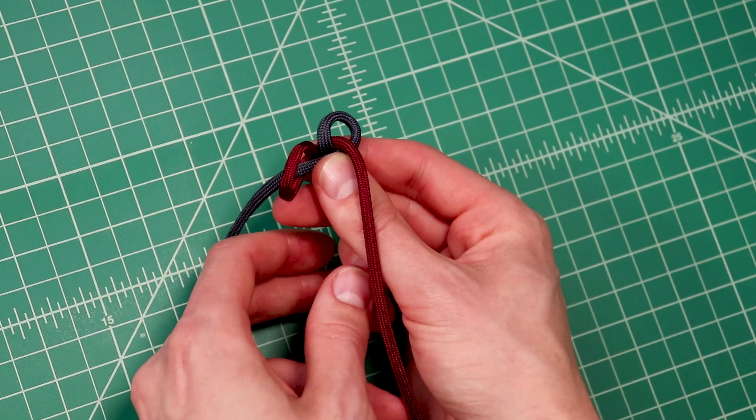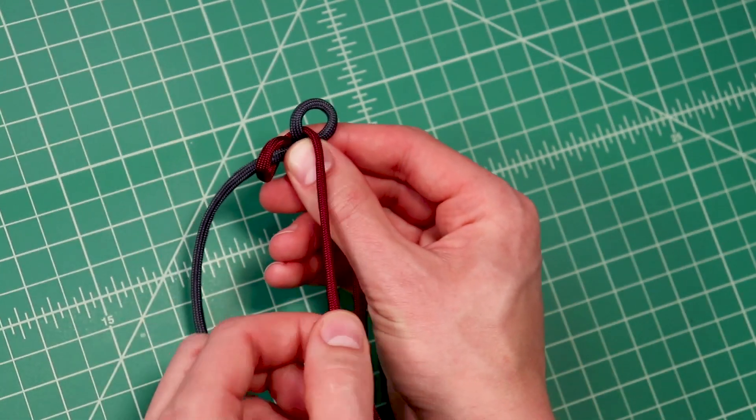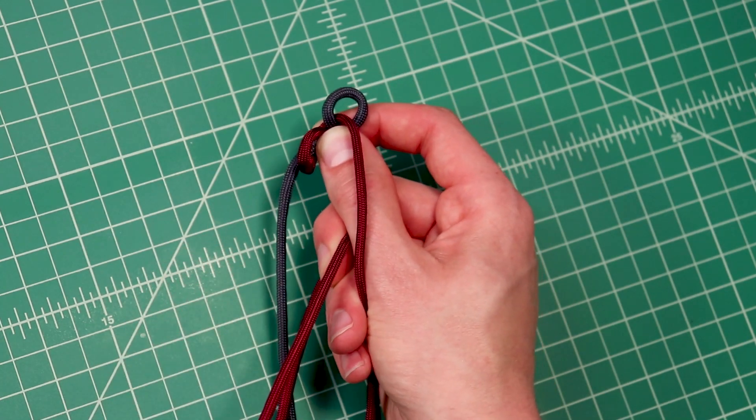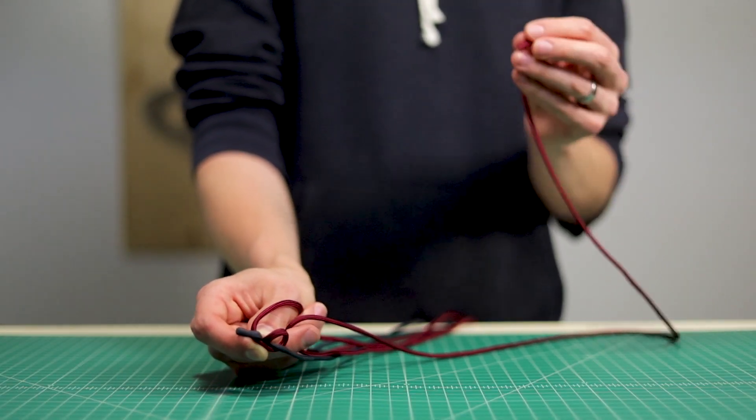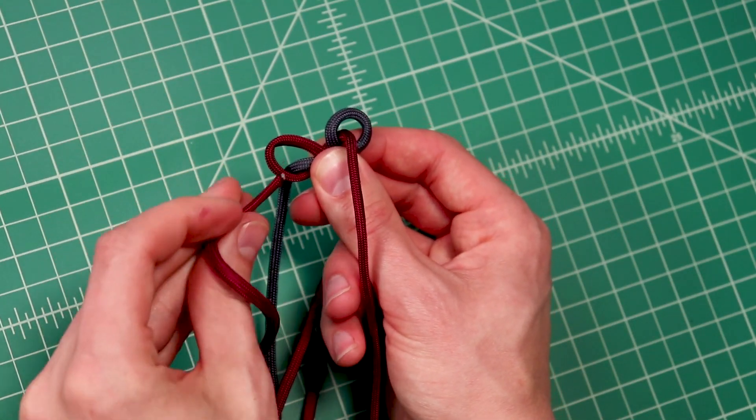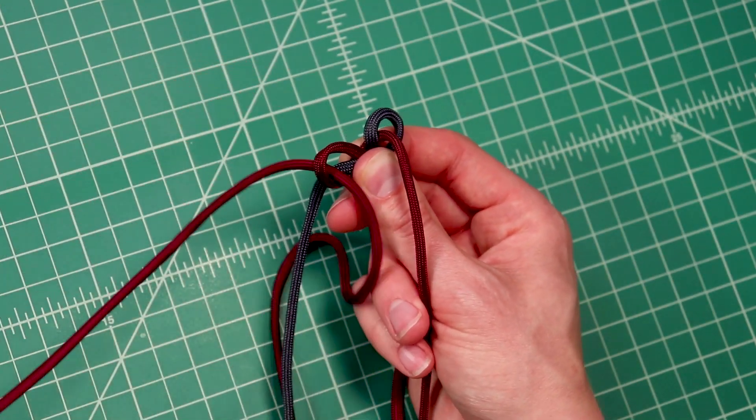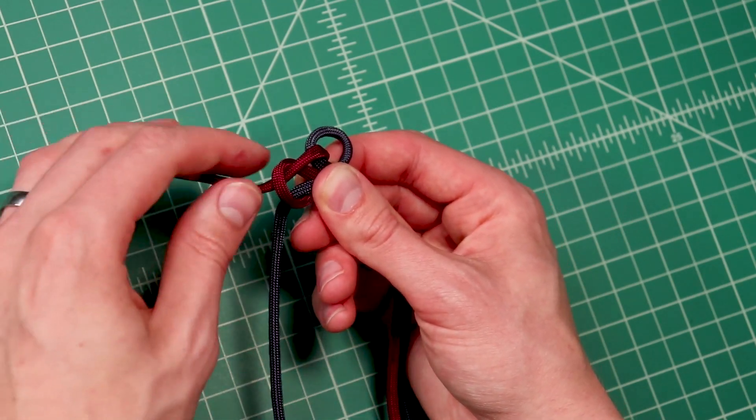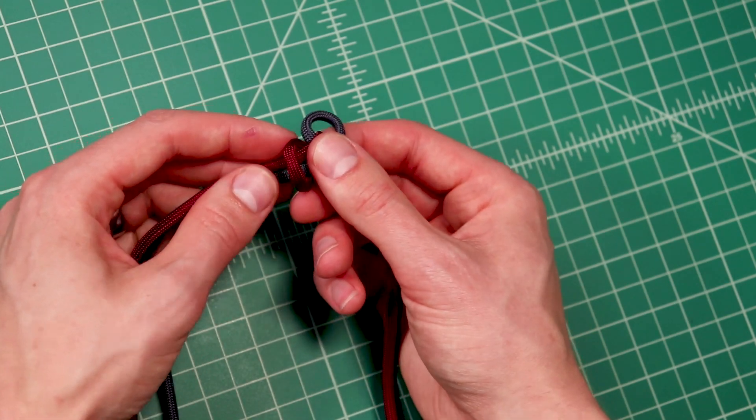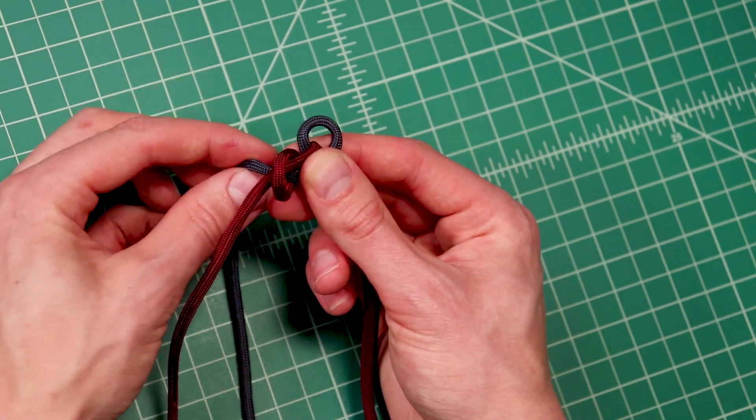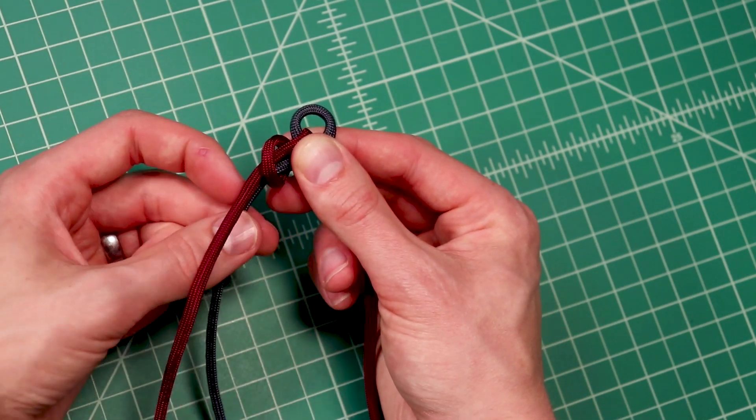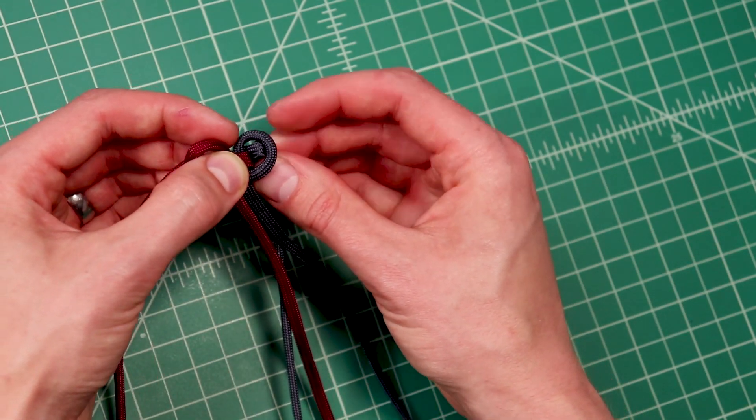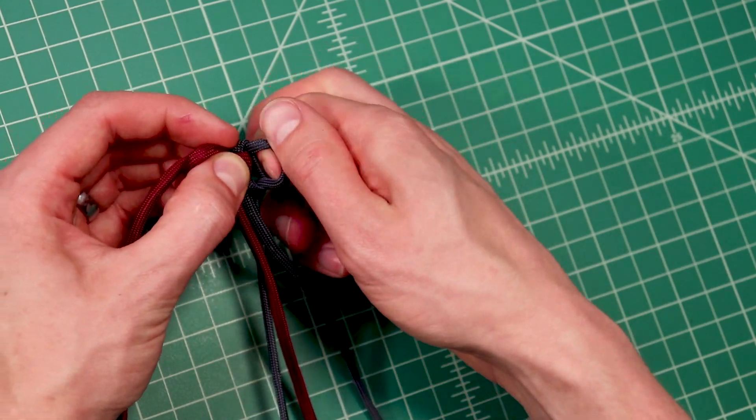And then where on the Mad Max you would tighten that all down, we're going to feed this red cord through that left side red loop. And then that gray cord that is also going through that loop, wrap that around back and bring it up through the right side loop.